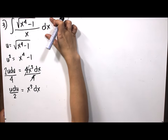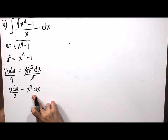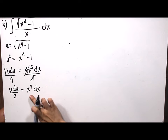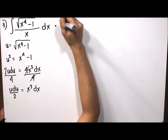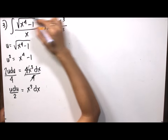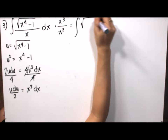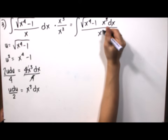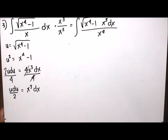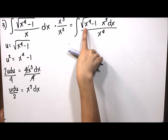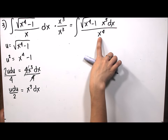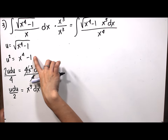The given integral does not contain x cubed dx directly, so we manipulate it by multiplying numerator and denominator by x cubed. This produces the square root of x to the fourth minus 1 times x cubed dx in the numerator, over x cubed times x, which is x to the fourth. Simplifying confirms it equals the original integral.